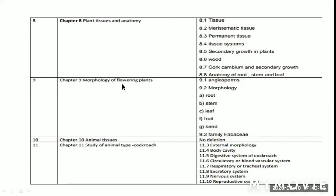Chapter 9, Morphology of Flowering Plants. 9.1 Angiosperms, 9.2 Morphology — which includes root, stem, leaf, fruit, and seed — we don't study morphology; these points are reduced. 9.3 includes Family Fabaceae, which should also be reduced.